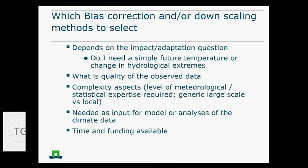Your question might be: what kind of downscaling or bias correction methods do I need? What is really important is, what is your particular question? For what kind of impact or adaptation question do you need the data? For some questions, you might only need simple future temperature information, and then a very simple bias correction might be enough. If you're interested in future meteorological or hydrological extremes, you might need a more complicated assessment. We can help you with that — use the forum, contact us, or talk to us during the midterm meeting. It is important to link the bias correction to your questions.